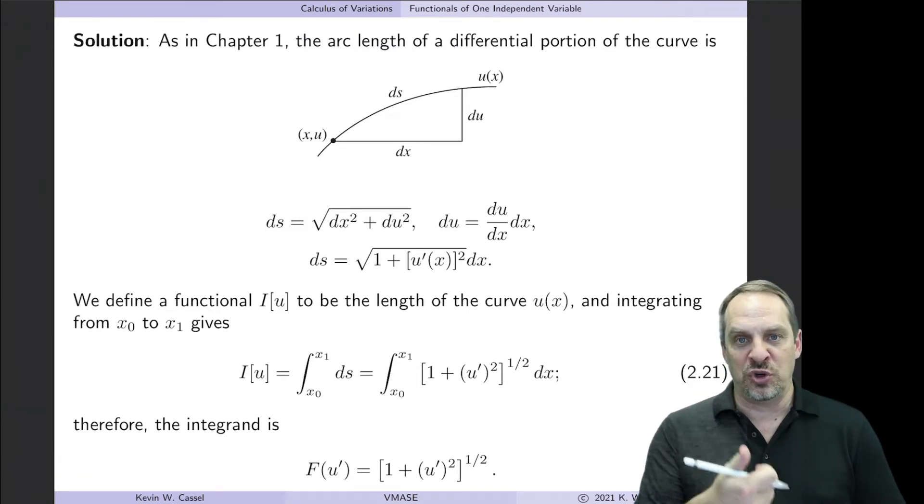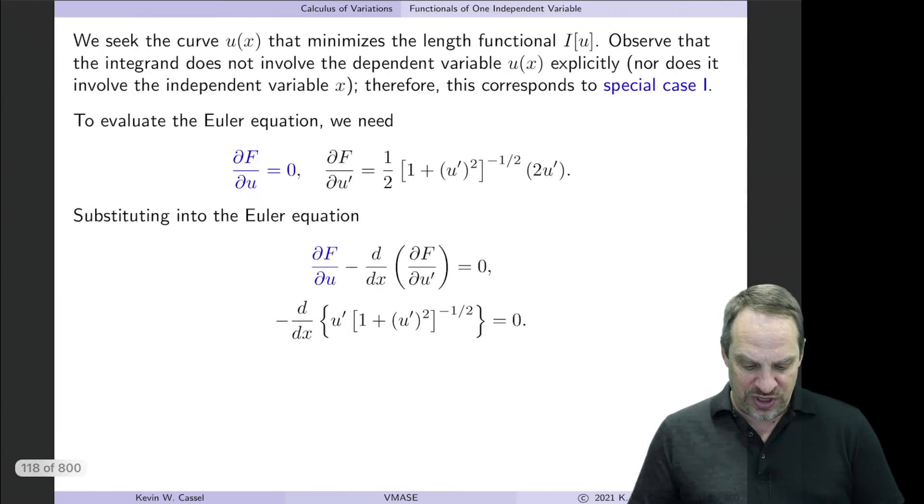For capital F of x, u, u prime, we know the Euler equation is ∂F/∂u minus d/dx of ∂F/∂u' equals zero. So let's evaluate ∂F/∂u and ∂F/∂u'.